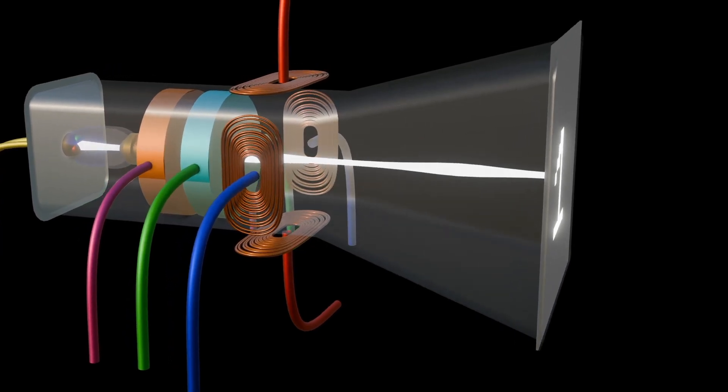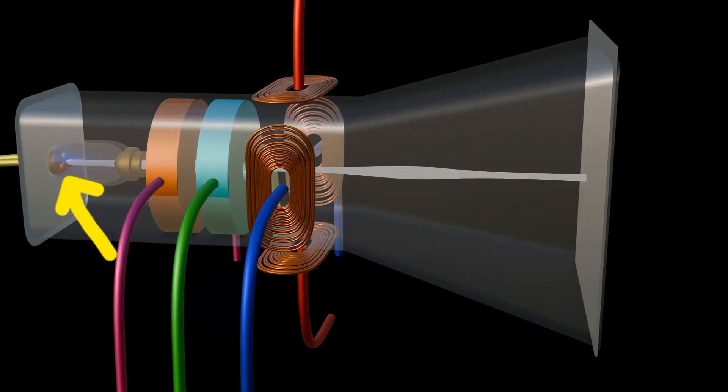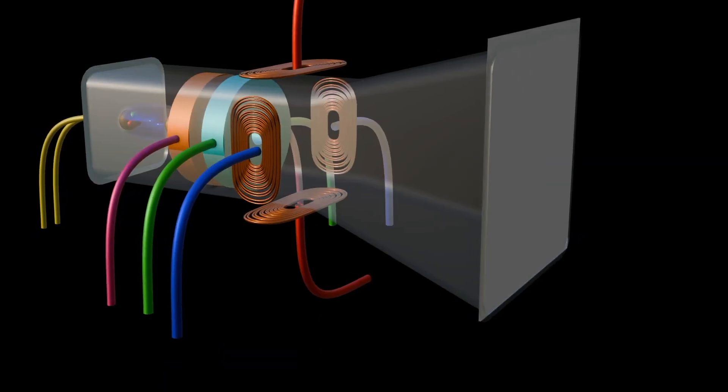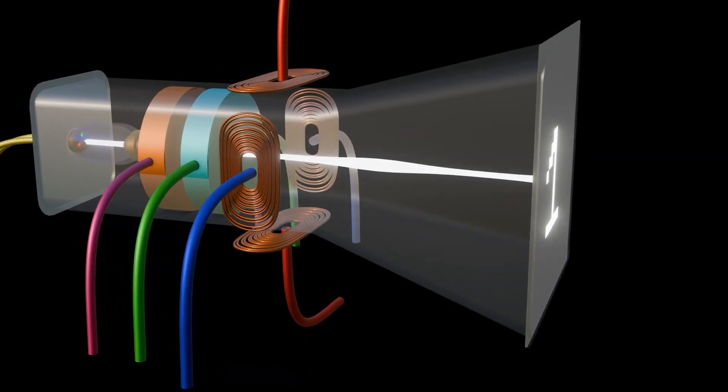Finally, the color cathode ray tube TV had three electron guns: red, green, and blue. The combination of these three colors at various intensities creates the full range of colors seen on the screen.